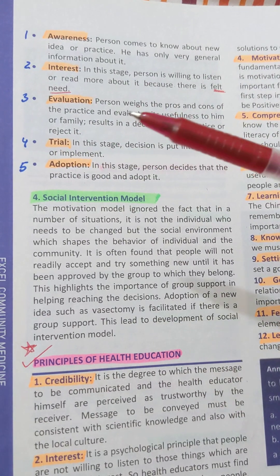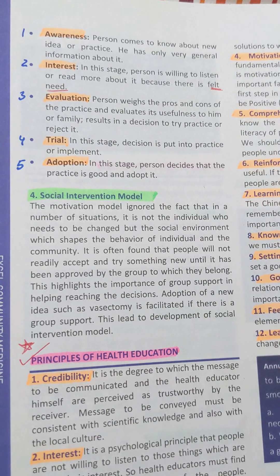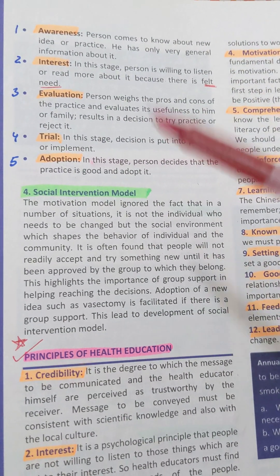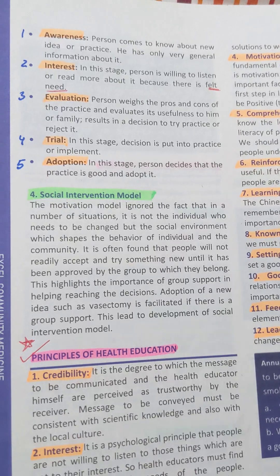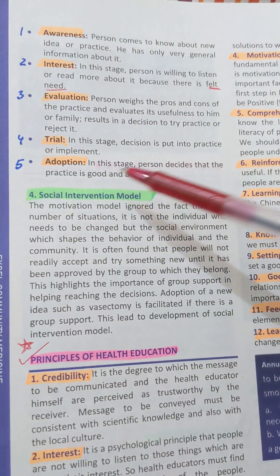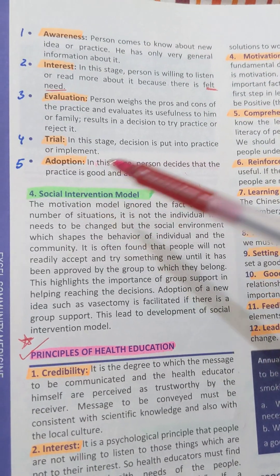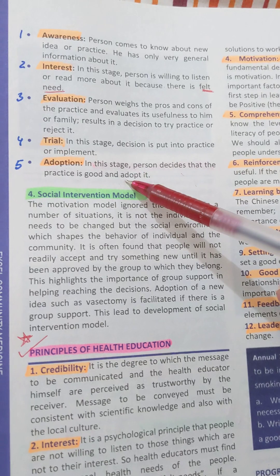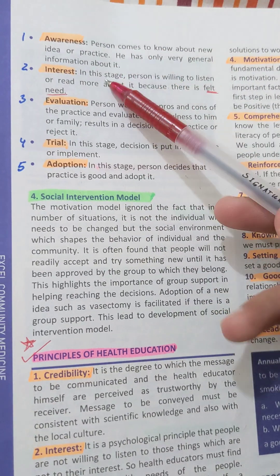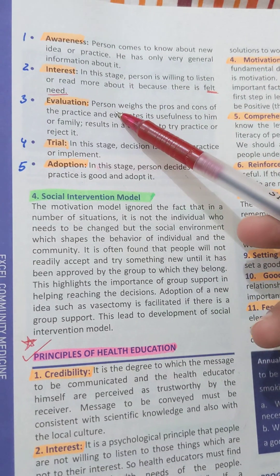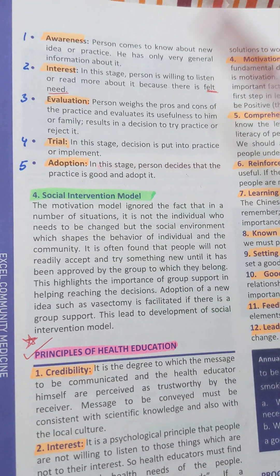The fourth stage is trial. In this stage, the decision is put into practice or implementation by the person. The fifth stage is adoption. In this stage, the person decides that the practice is good and should adopt it. So in the ITA model, the stages are: awareness, interest, evaluation, trial, and then adoption.